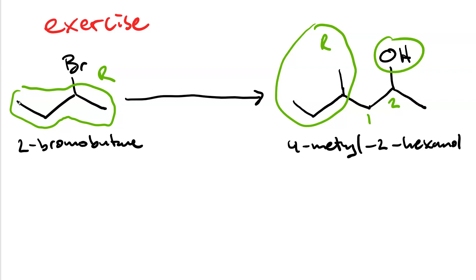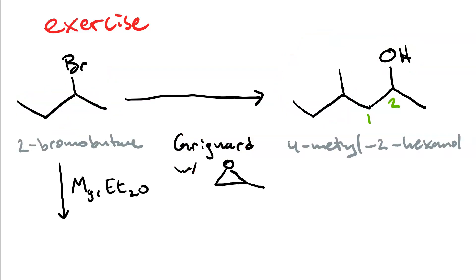That's right. This is a Grignard synthesis with an epoxide. Specifically, 2-methyloxorane. So, how do we make this happen? First, we make the Grignard reagent. And to make that Grignard reagent, we react our alkyl halide, 2-bromobutane, with magnesium and diethyl ether. So, there's our Grignard. Sec-butyl magnesium bromide.